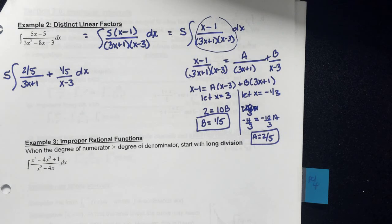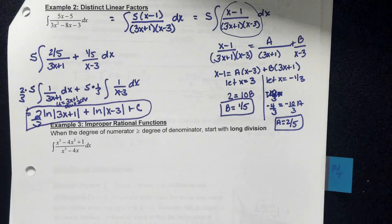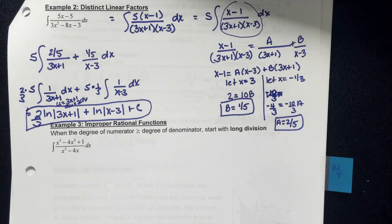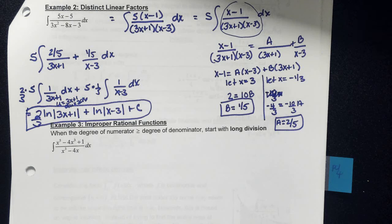Go ahead and integrate term by term. Don't forget you may have to do u-substitutions. You should end up with (2/3)ln|3x+1| + ln|x−3| + C. Any questions on how to solve these using partial fraction decomposition?